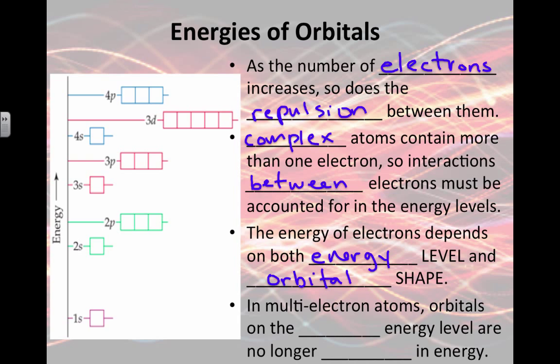In multi-electron atoms, the orbitals on the same energy level are no longer equal in energy because each subshell has a different amount of repulsions between electrons. So we have to have a separate space to show that 2s has a different kind of repulsion than 2p.